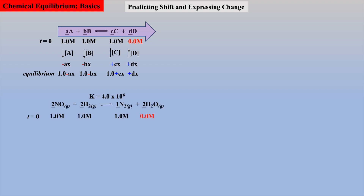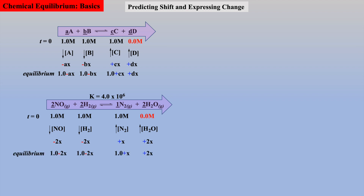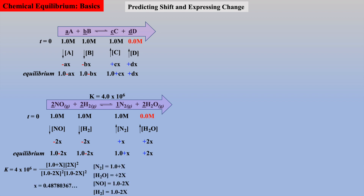An example equilibrium where one of the products is 0 is shown. Again, we know the shift is going to be to the right to obtain a K value, and that the concentrations of reactants will drop and the concentrations of products will increase. The changes — negative for reactants and positive for products — coupled with the stoichiometric coefficients and initial concentrations yield the final expression for change, which can be substituted into the law of mass action to determine a value of X. It is worth noting that determining the value of X requires some challenging algebra, so a readily available CAS called SIMPI was employed to afford the value of X.